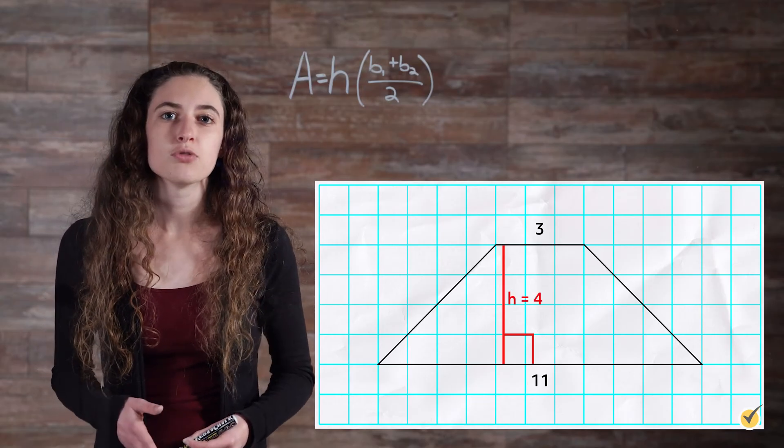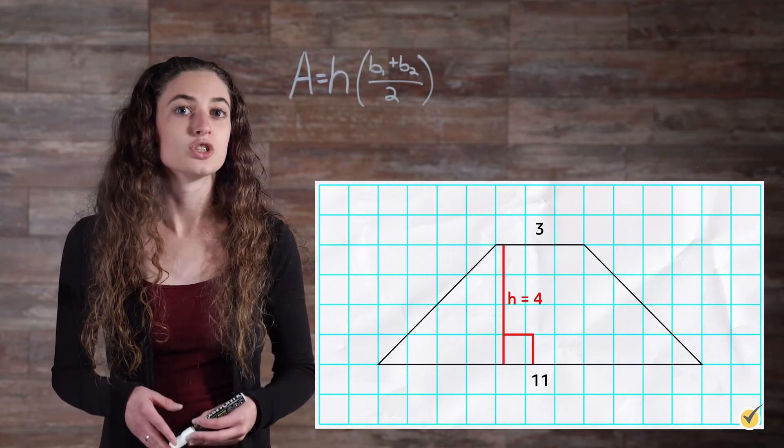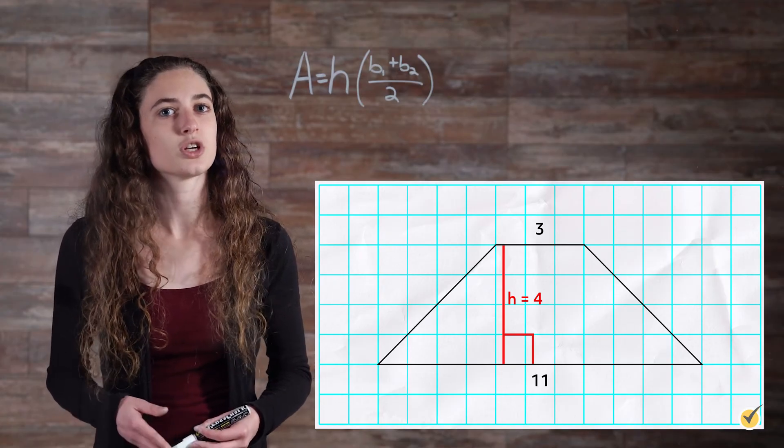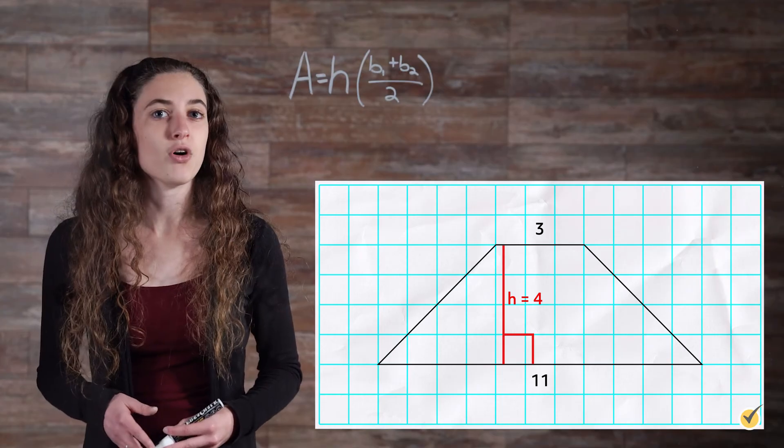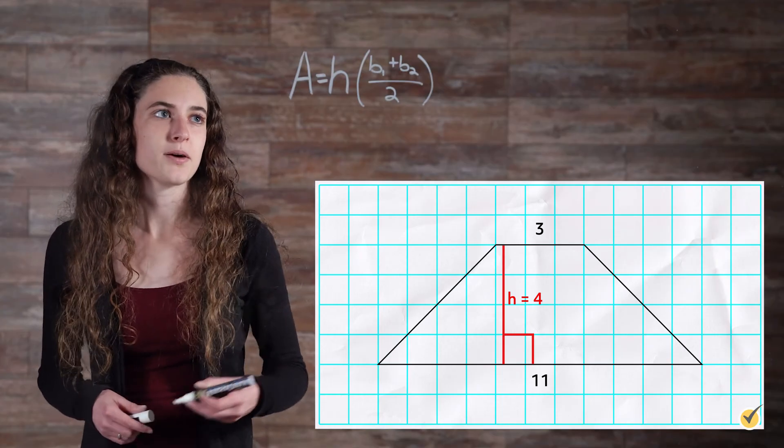For area, we don't need the measurements of the two legs, just the two bases and the height, which can also be called the altitude. Since we have all three, we can plug them into our formula.